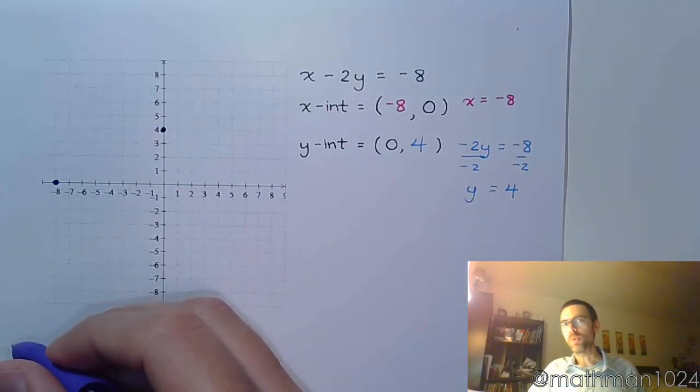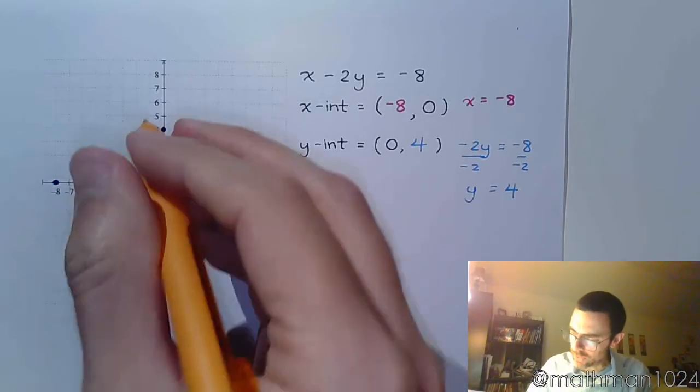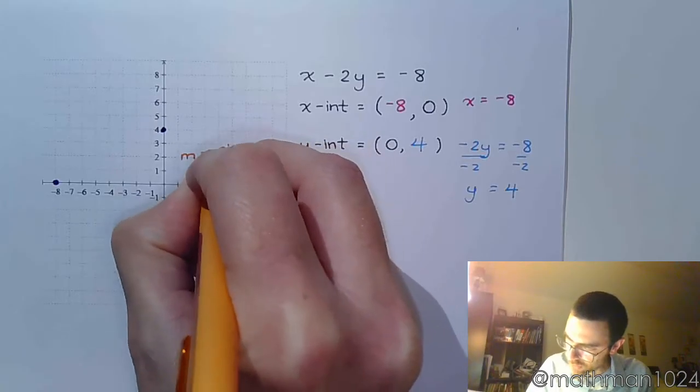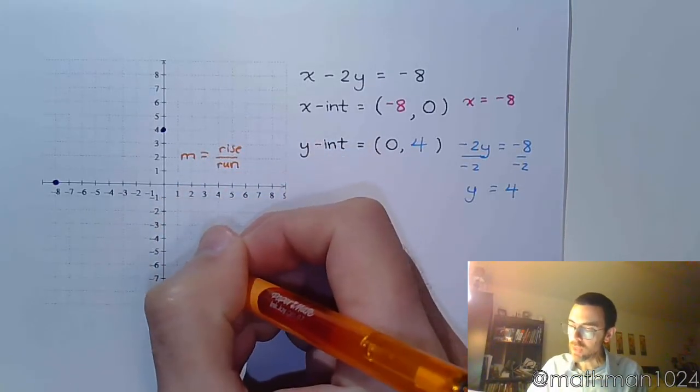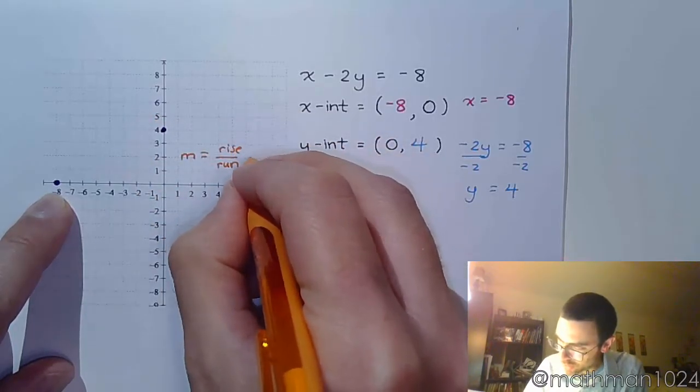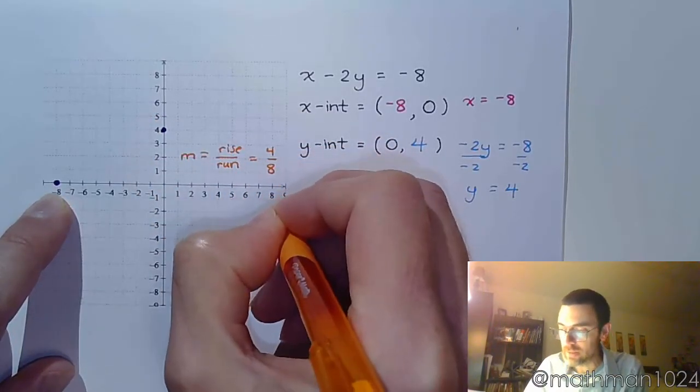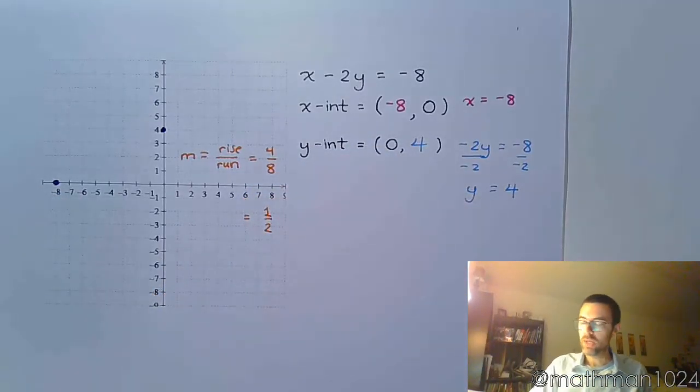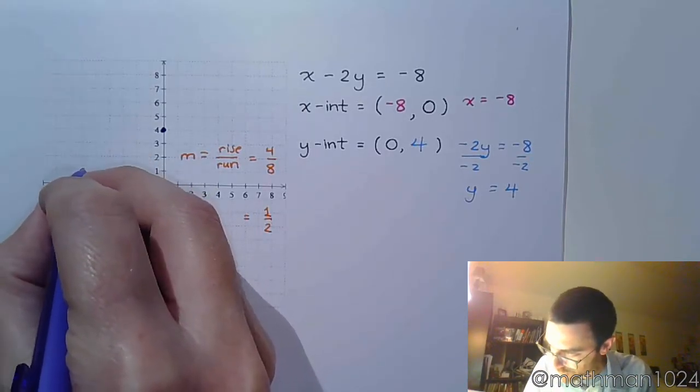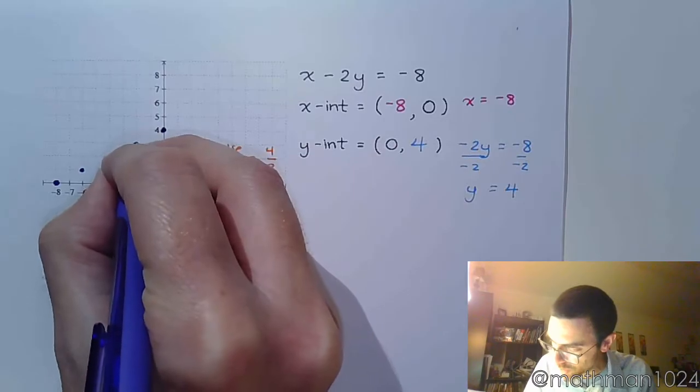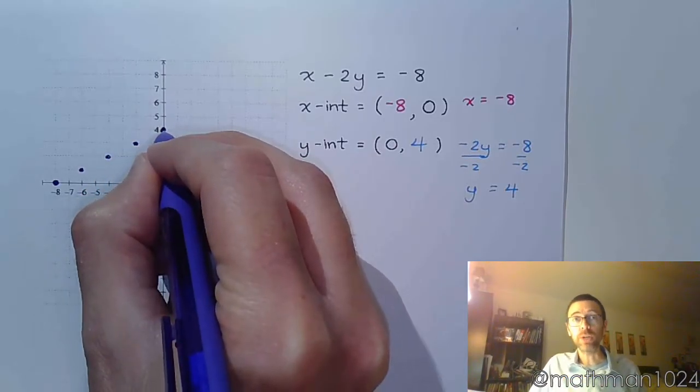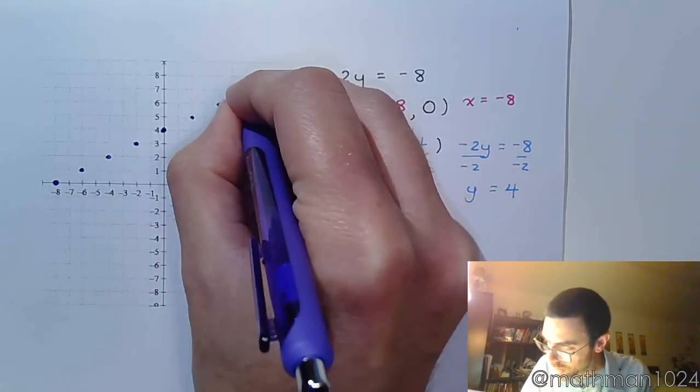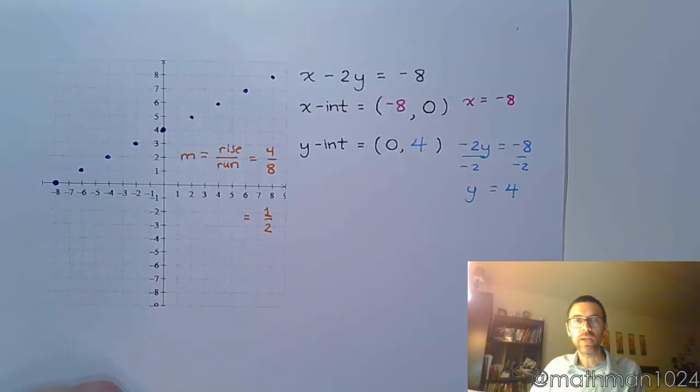We can use the slope to get more points, so let's calculate the slope. The slope here is going to be rise over run. From here to here I am going up 4 and over 8, which reduces to a fraction of 1 half. So from here, up 1 over 2, up 1 over 2, and so on. I land back at that y-intercept, so I feel pretty good about this slope. Keep doing that, up 1 over 2 until you get to the edge and run out of room.